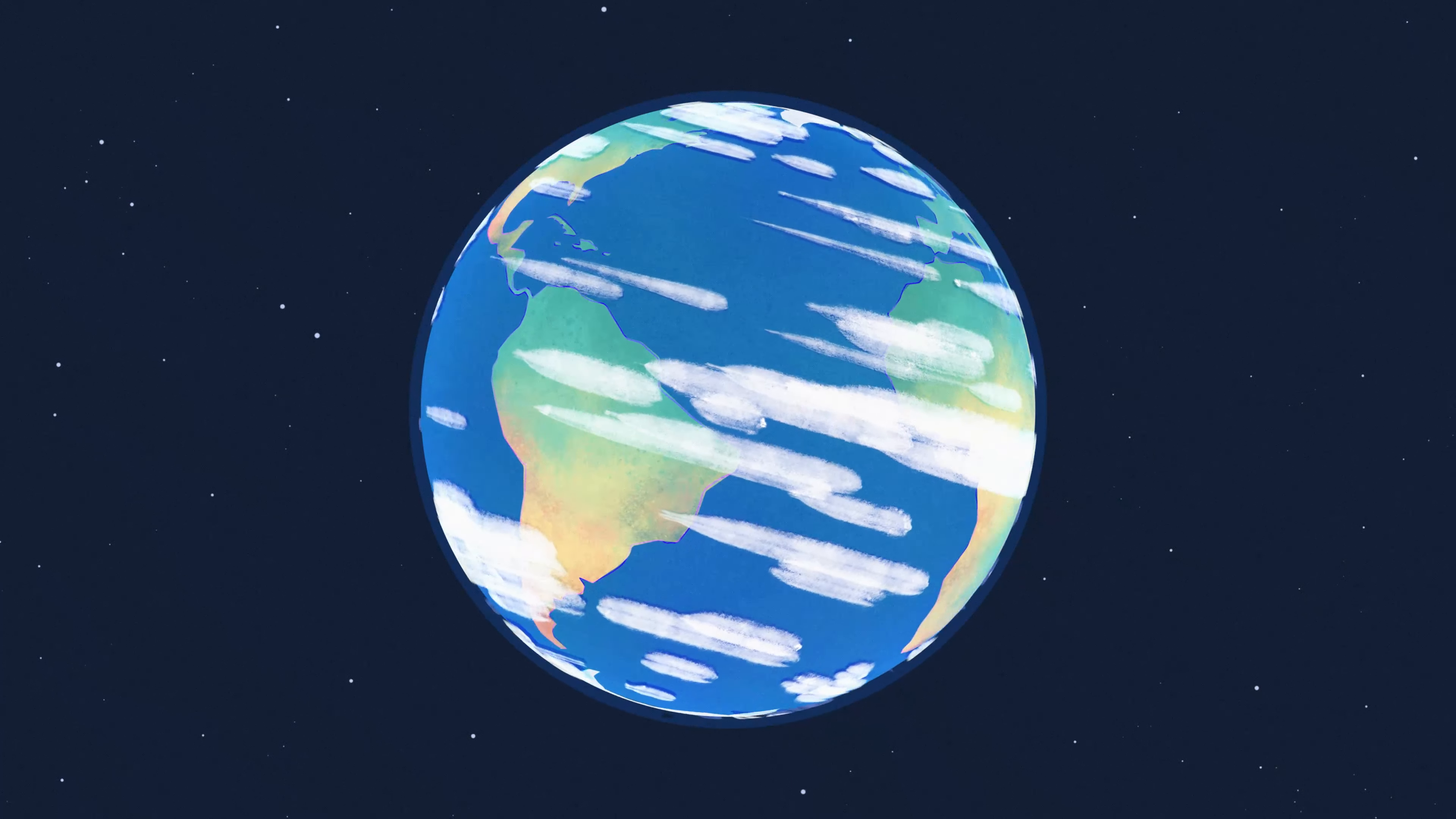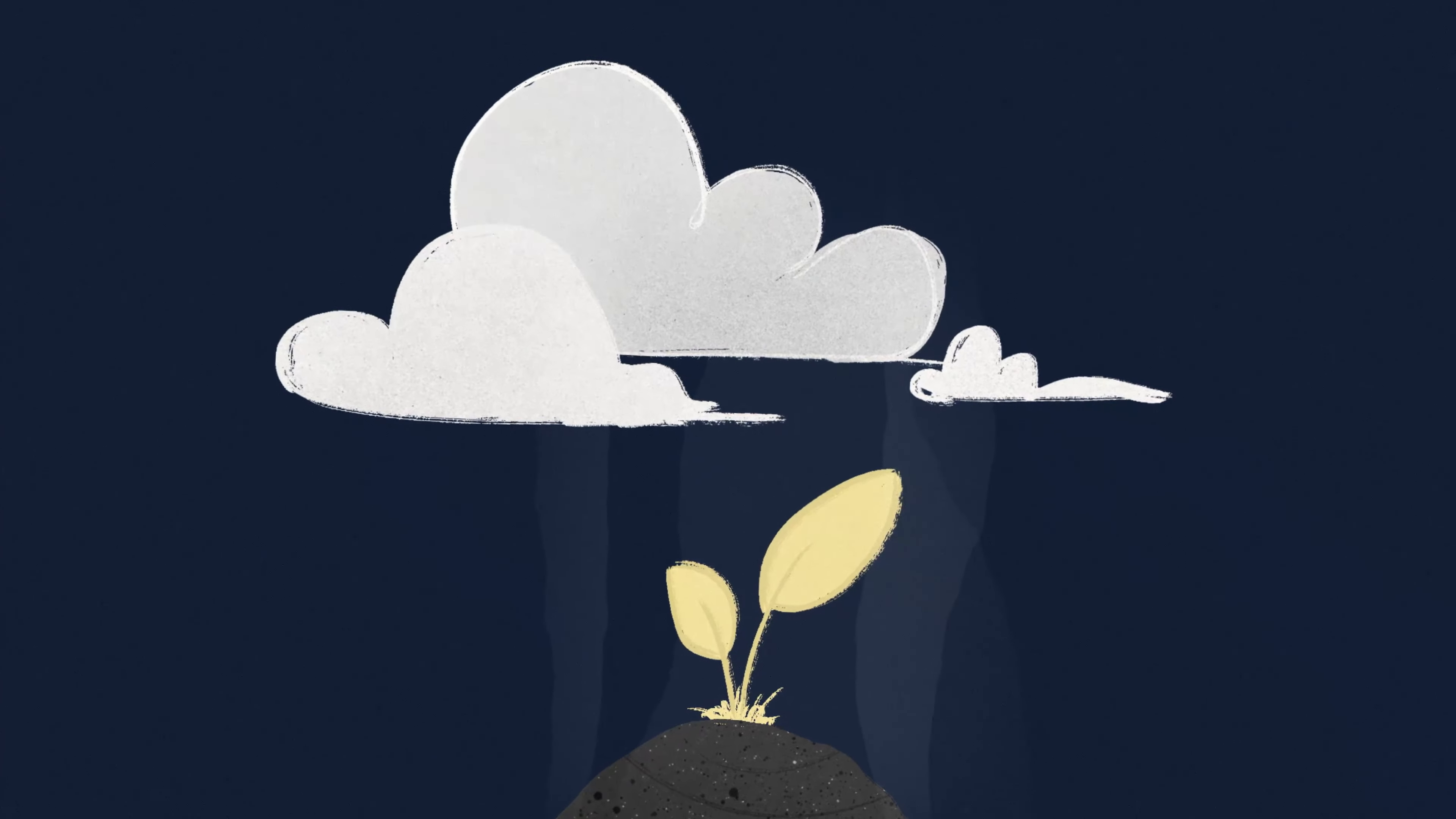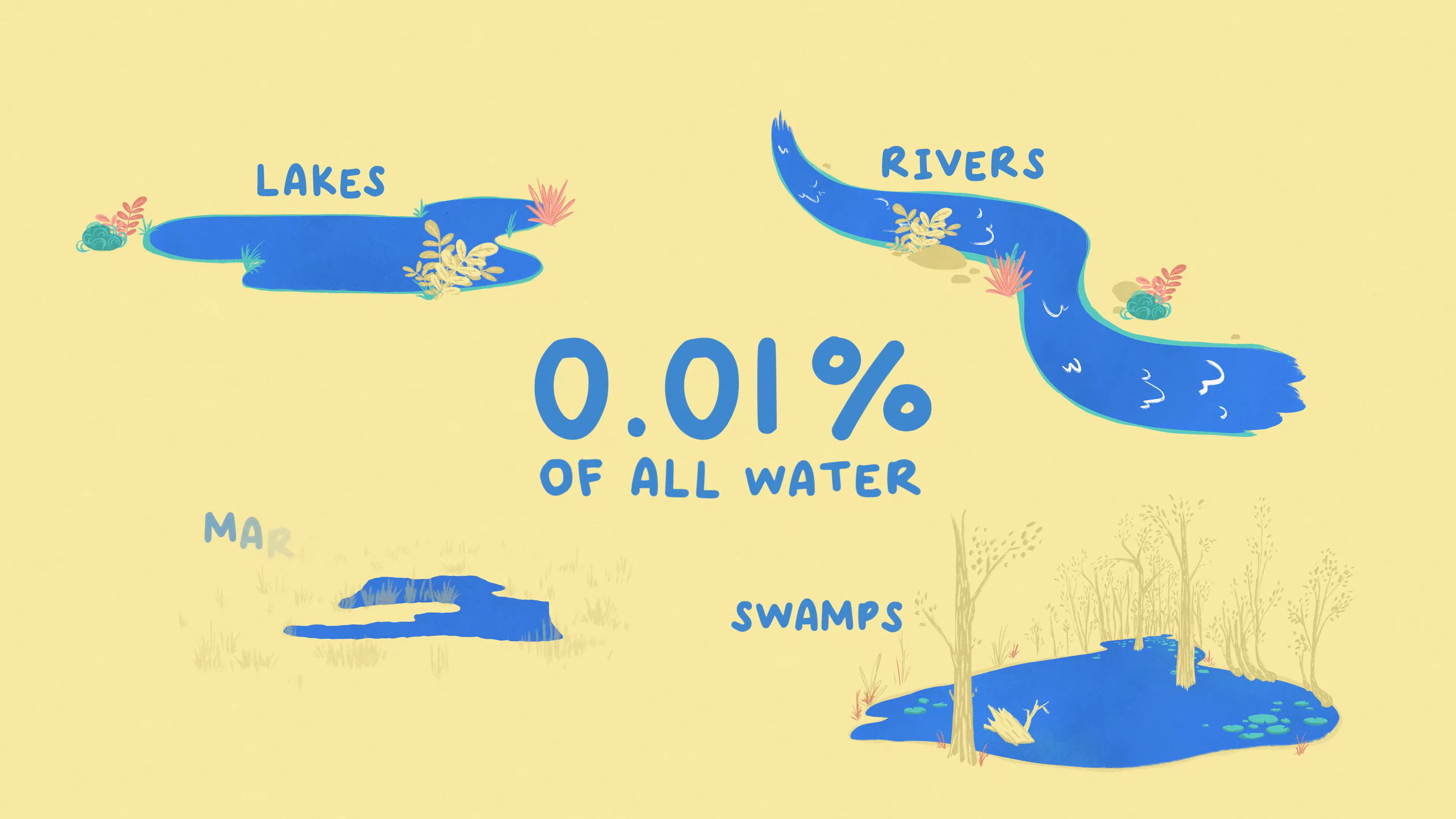Most of this tiny fraction of Earth's water is frozen as permafrost. Some exist as moisture in the soil, a bit in the atmosphere as water vapor, and some makes up the water that exists within living creatures. Just 0.01% of all water on Earth is on the surface in lakes, rivers, swamps, and marshes.